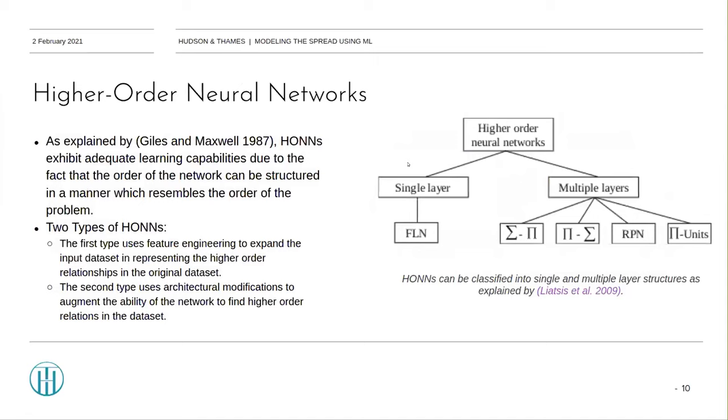Higher-order neural networks, as explained by Giles and Maxwell in 1987. Higher-order networks exhibit adequate learning and storage capabilities, due to the fact that the order of the network can be structured in a manner which resembles the order of the problem. Although the extent of their use in finance has so far been limited, Knowles et al. in their 2009 paper showed that with shorter computational times and limited input variables, the best higher-order networks show a profit increase over the standard multi-layer perceptron of around 8%.